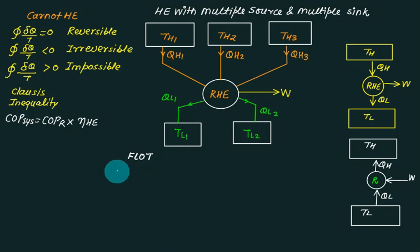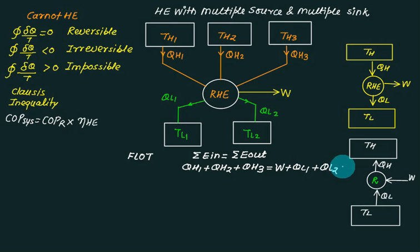First law. I am applying law of conservation of energy: summation of energy in equals summation of energy out. Heat and work, both are energy. With respect to heat engine, you have to give the sign convention. QH1 is in, QH2 is in, QH3 is in with reference to heat engine. And how many out? W is out, QL1 is out, and QL2 is out. Equation number 1.